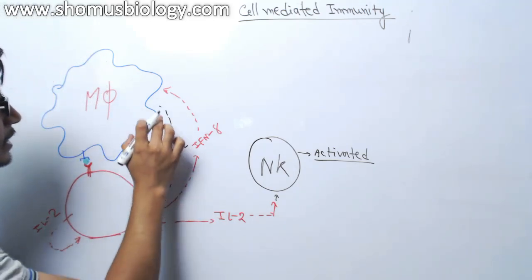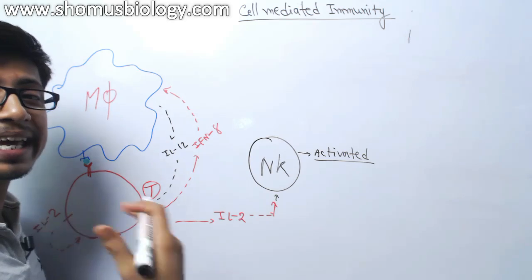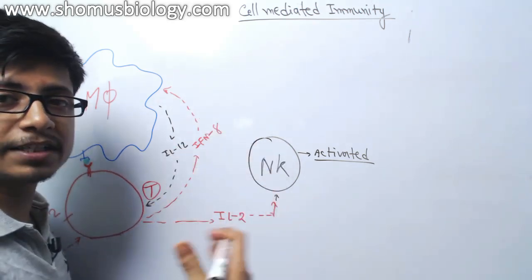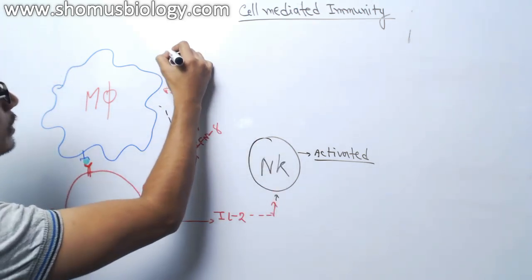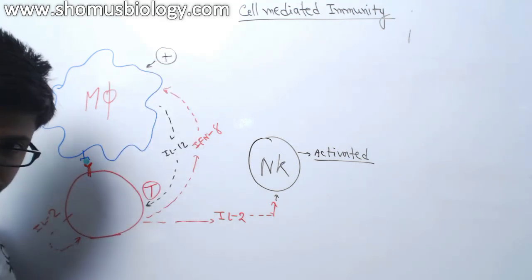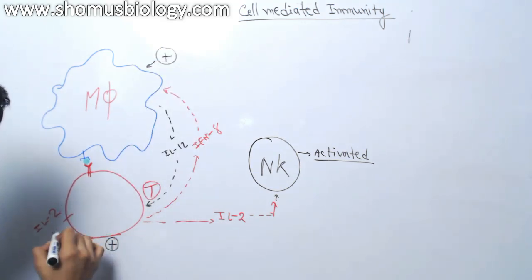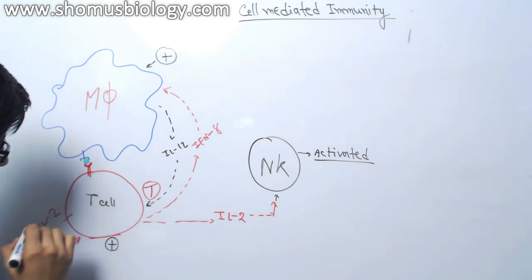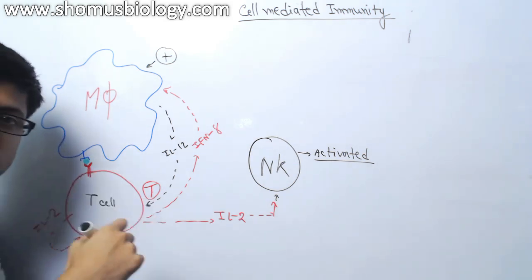We see that T-cell is signaling macrophage to engage in more macrophage T-cell interaction. So it is giving a positive signal to macrophage. It is providing positive signal to itself with the help of this autocrine signaling.